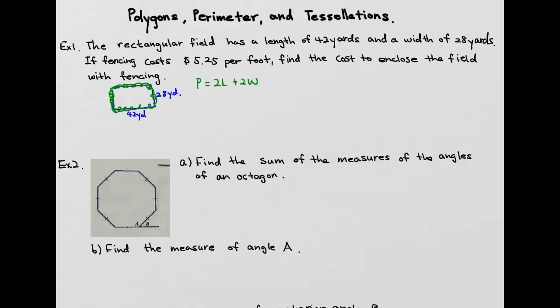And we know that length is 42, width is 28. So our perimeter comes from 84 plus 56, which is 140 yards.